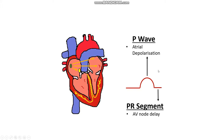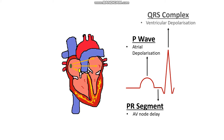Clinically speaking, we're more interested in the PR interval, which ranges from the beginning of the P-wave to the beginning of the QRS complex. Next, depolarisation of the atrioventricular septum and then the Purkinje fibres gives us the QRS complex — the Q-wave being the first deflection downward, the R-wave being the first deflection upward, and the S-wave being the next deflection downward.